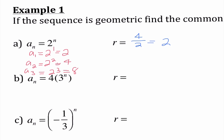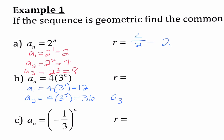For the next problem, a₁ is 4 times 3 to the first power, which is 12. a₂ would be 4 times 3 squared, which gives us 4 times 9, which is 36. And a₃ is 4 times 3 cubed, so 4 times 27 gives me 108. To find the ratio, I do 36 divided by 12, which is 3. Double-checking: 12 times 3 is 36, and 3 times 36 is 108. So our ratio here is 3.